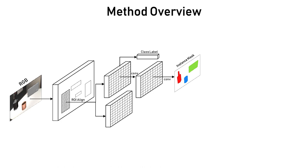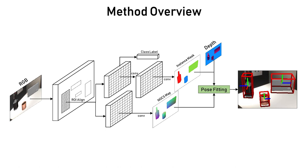We use a convolutional neural network to predict the class label and instance mask of seen objects. Our network can also regress the NOCS coordinates of each object in the form of a NOCS map. The predicted NOCS map is then used together with the input depth map to obtain the full metric 6DoF pose and dimensions of objects.